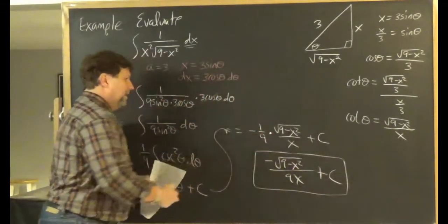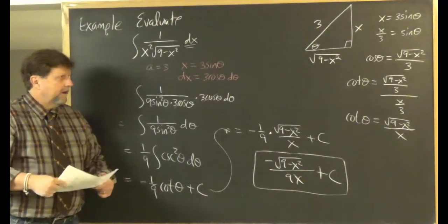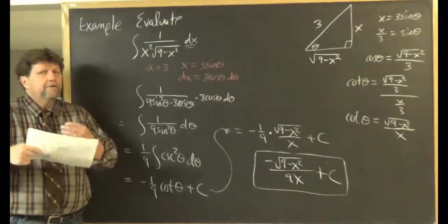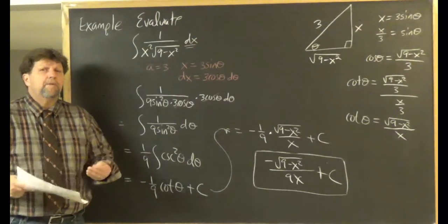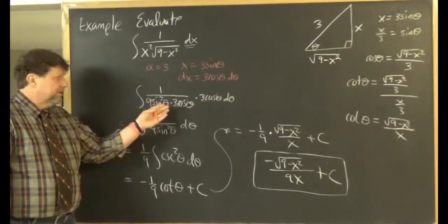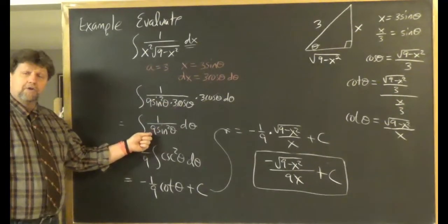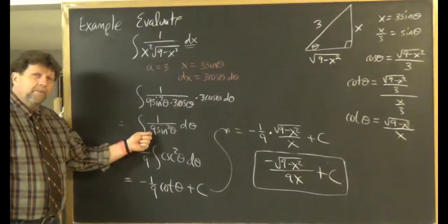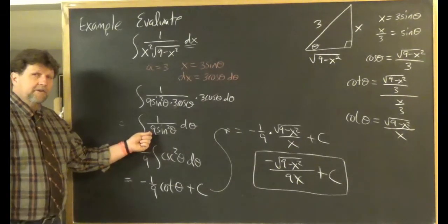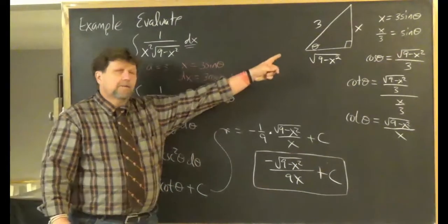That was your first example of a trigonometric substitution. To recap: part one is the actual trigonometric substitution; part two gives you a trigonometric integral; and part three uses a right triangle to resubstitute back to the original variable.